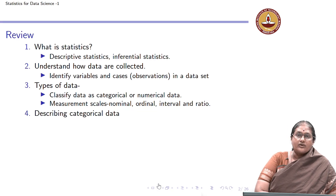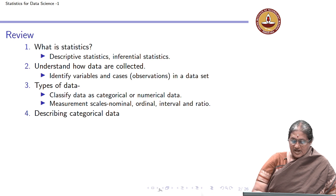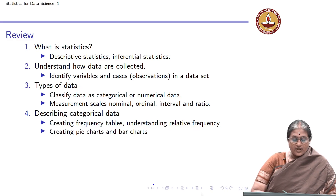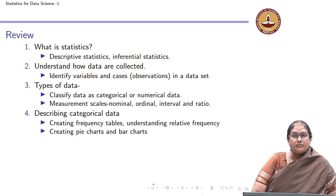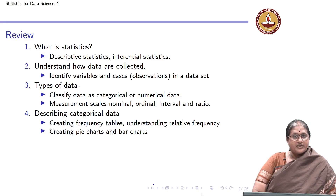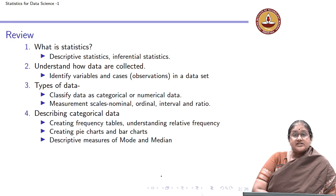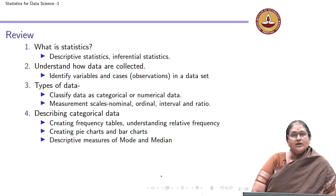Then we went on to describe categorical data, focusing on describing a single variable. We introduced the notion of frequency tables and the concept of relative frequency. For graphical measures, we talked about pie charts and bar charts. Pie charts are used when you want to show the share of a particular category in the overall picture, whereas bar charts are useful when you want to represent counts. We also looked at descriptive measures of mode and median. While mode can be applied to nominal data, when you want to talk about a median, the data needs to be ordinal — there should be an order in your data.